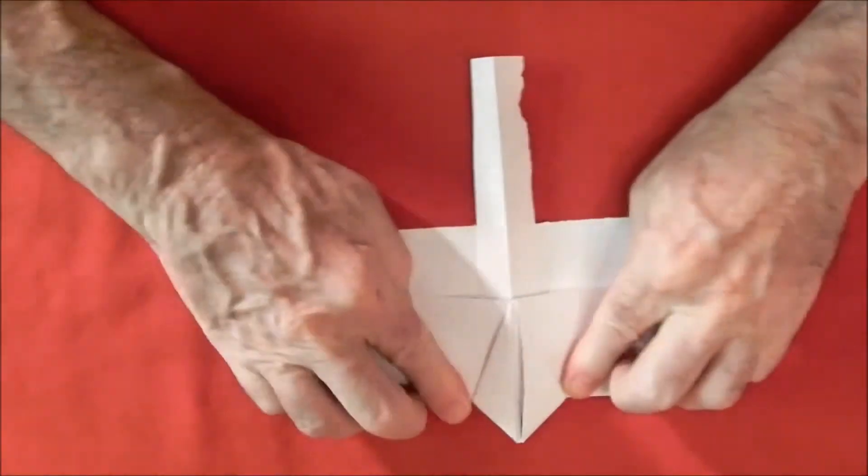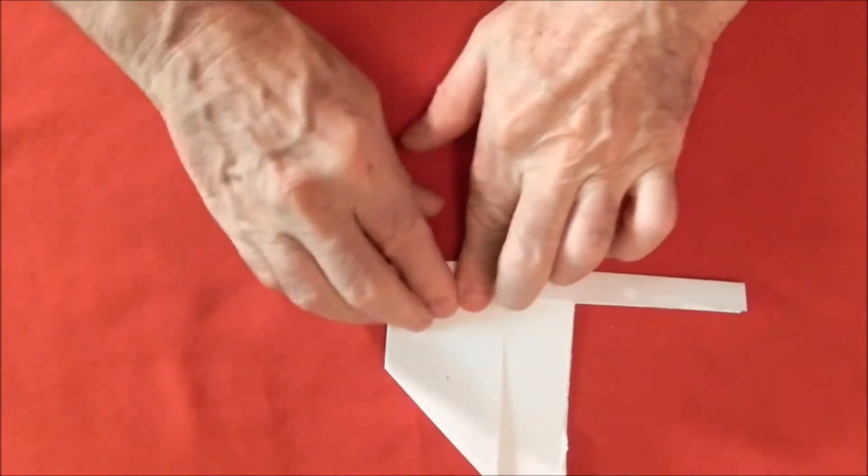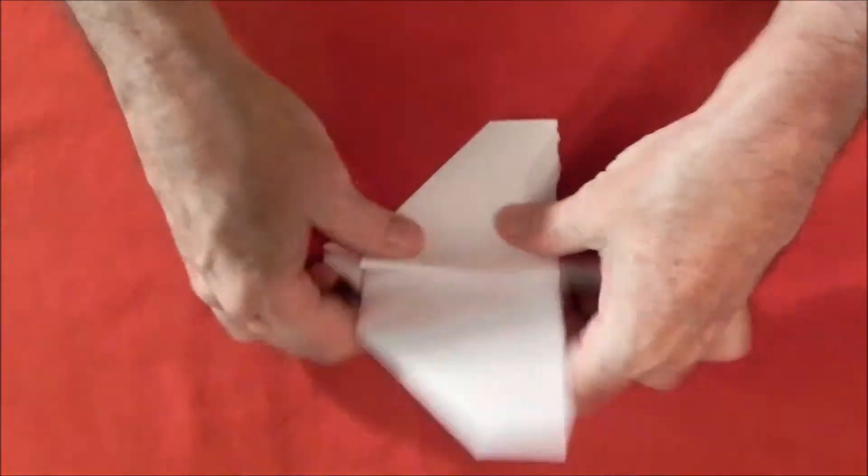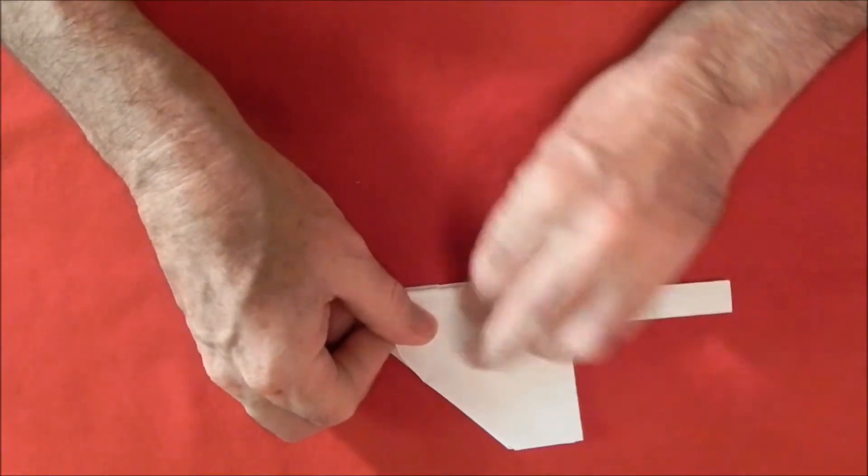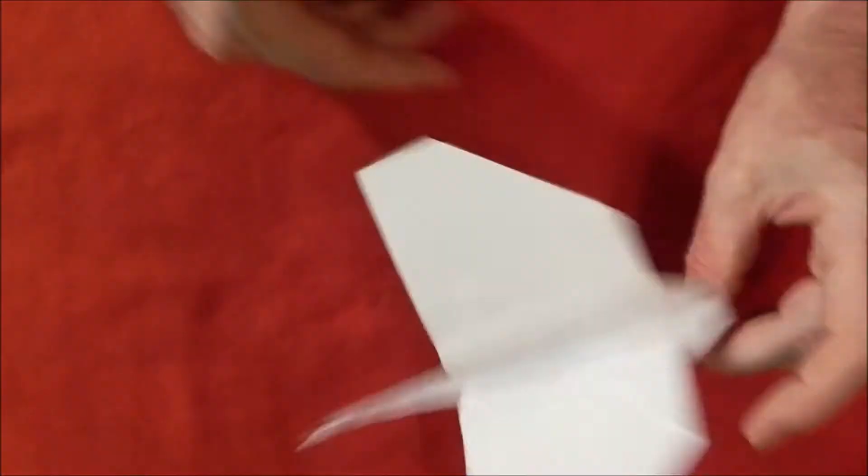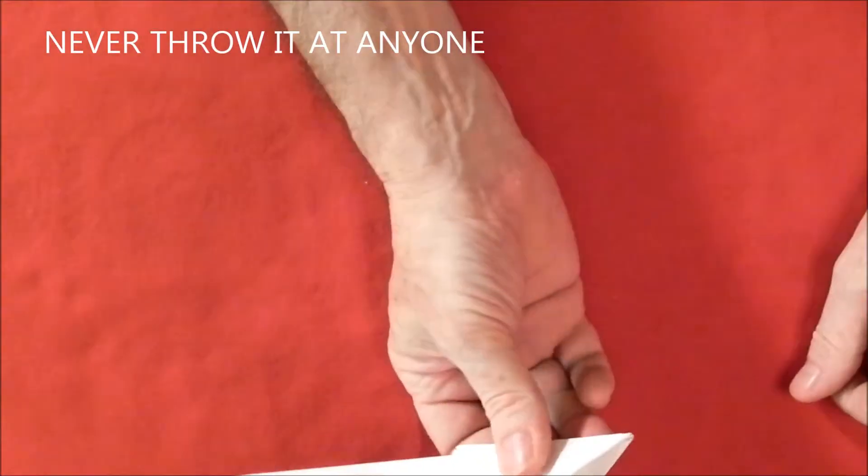Now by folding that over like that, you've now trapped the tail in. The tail can't come out or fall out. We fold the whole thing that way like that. Now we fold one wing down, turn it over, fold the other wing down, crease it both creases. And there you have a plane.